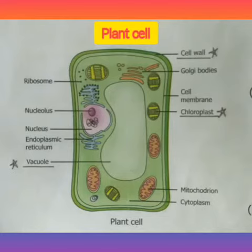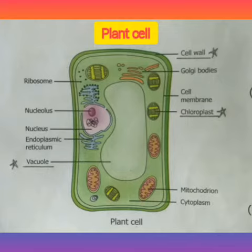In this video, we will study about plant cells and animal cells. In case of plant cells, we can find several small colored bodies scattered in the cytoplasm. These are called plastids.